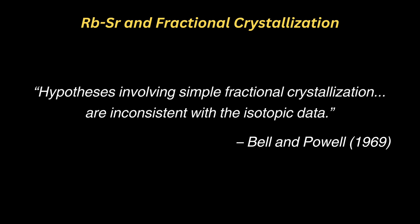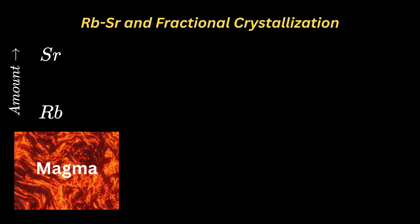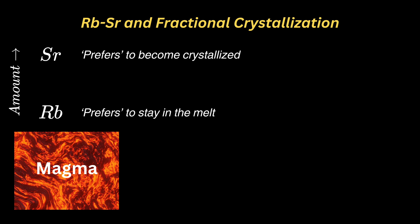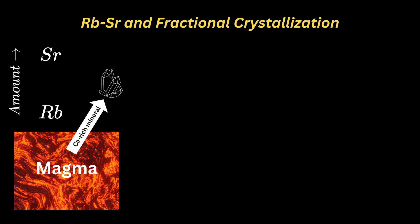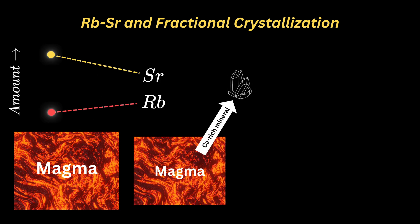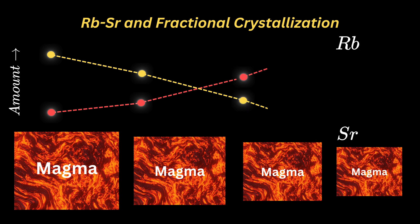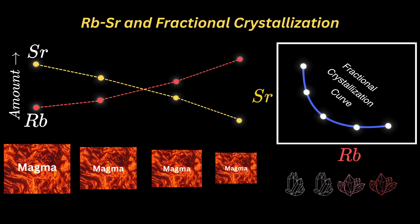Let's start with a hypothetical magma with given concentrations of strontium and rubidium. As this magma cools, it will begin to solidify. However, because strontium can replace calcium in high-temperature minerals, it is readily crystallized. Rubidium, on the other hand, replaces potassium in low-temperature minerals, so it prefers to stay in the melt. When calcium-rich minerals solidify from the melt, strontium is removed while rubidium becomes more concentrated. As this process of fractional crystallization continues, the melt progressively becomes rubidium-rich and strontium-poor. The result is a curved relationship between strontium and rubidium concentration, which apparently the authors did not find in their data.